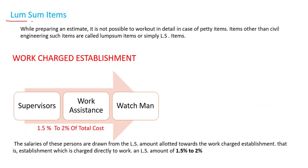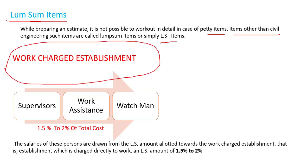The next term is lump sum items. While preparing an estimate, it is not possible to work out in detail for petty items or items other than civil engineering items — such items are called lump sum items, or L.S. items. The first lump sum item is work charge establishment, which includes supervisor, work assistants, and watchmen. Since we do not have an exact idea of their cost during estimation, we take 1.5% to 2% of total cost for these.